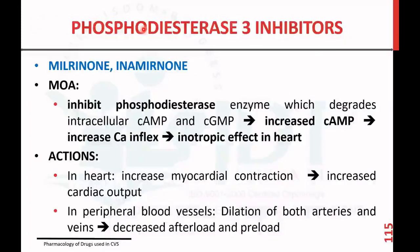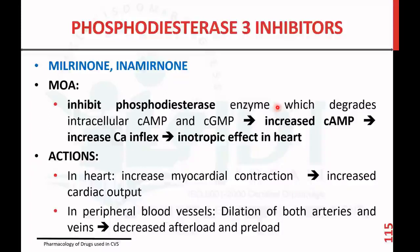Coming to phosphodiesterase-3 inhibitors, such as milrinone and amrinone: the mechanism of action is that they inhibit the phosphodiesterase enzyme, which is responsible for the conversion of cyclic AMP to AMP. By inhibiting this enzyme, they prevent that conversion, resulting in increased cyclic AMP. Increasing cyclic AMP increases calcium influx, producing a positive inotropic effect in the heart.